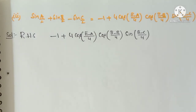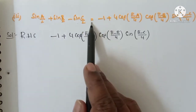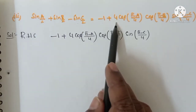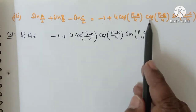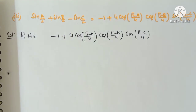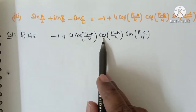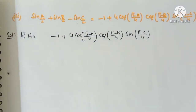Now we see the third bit of the fifth question. In triangle ABC: sin(A/2) + sin(B/2) − sin(C/2) = −1 + 4 cos((π−A)/4) · cos((π−B)/4) · sin((π−C)/4). This is a very very important 7-marks question. Taking RHS: −1 + 4 cos((π−A)/4) · cos((π−B)/4) · sin((π−C)/4).